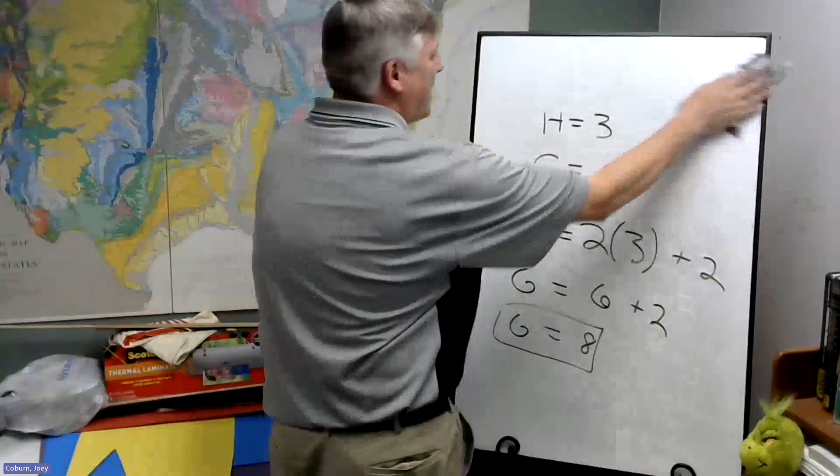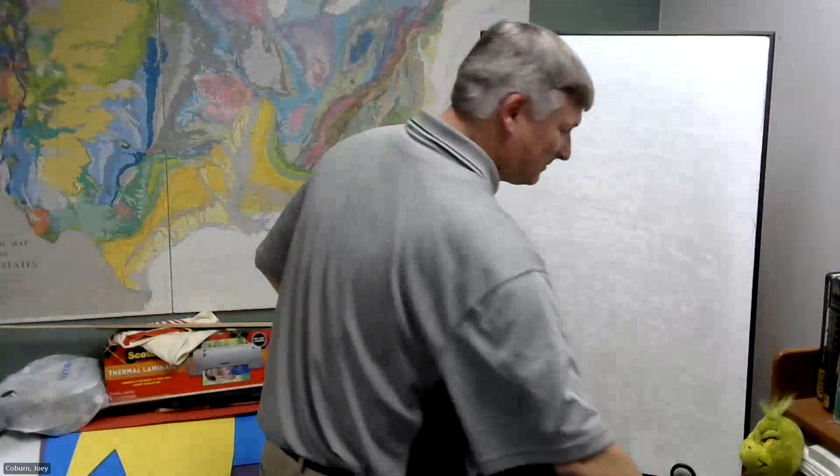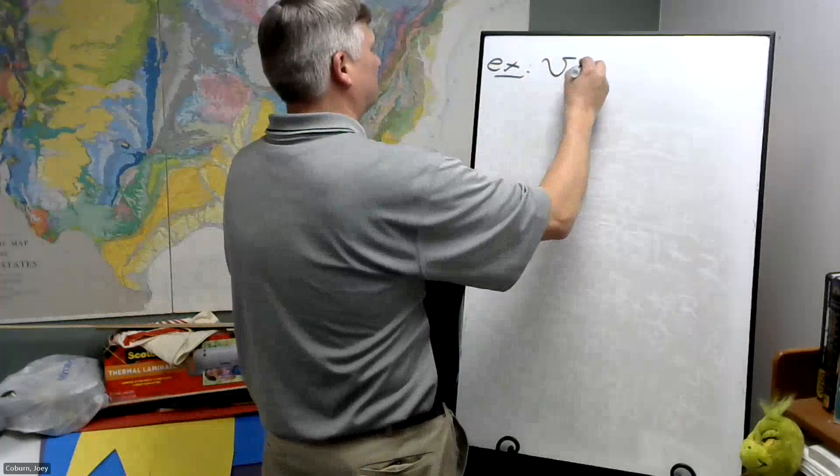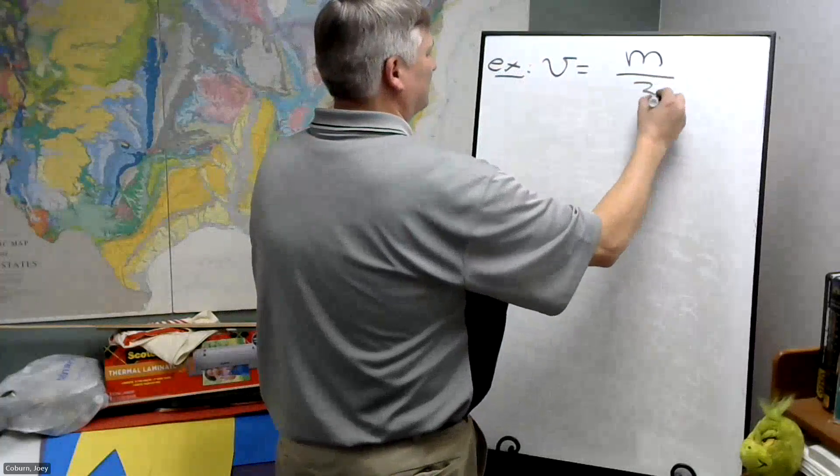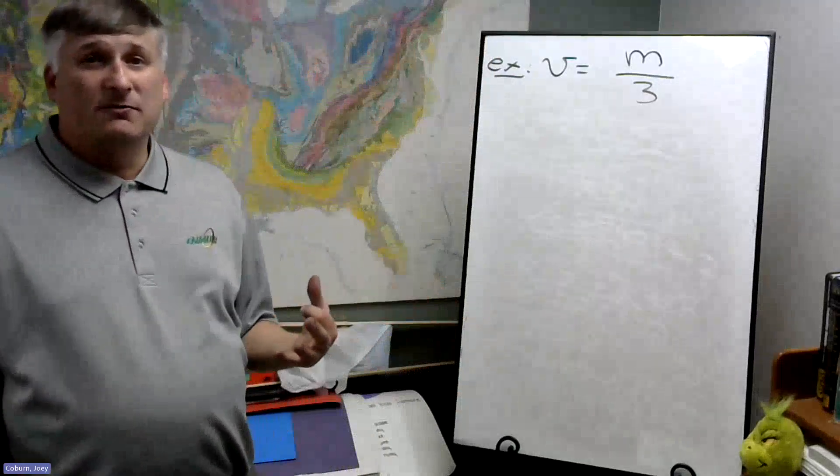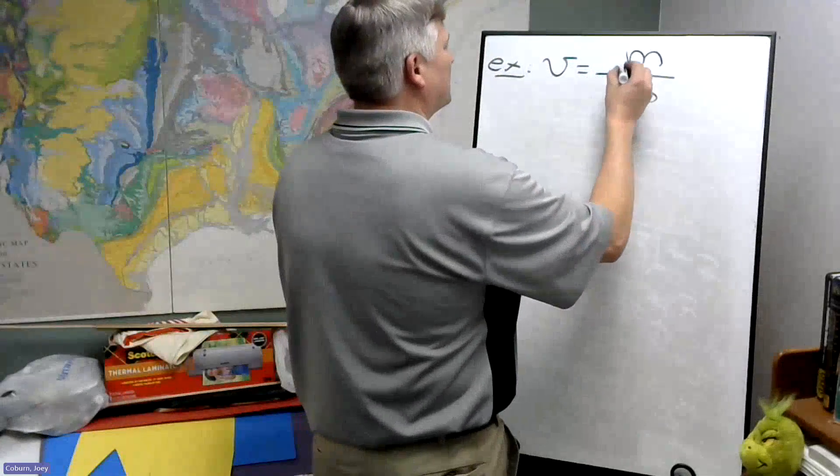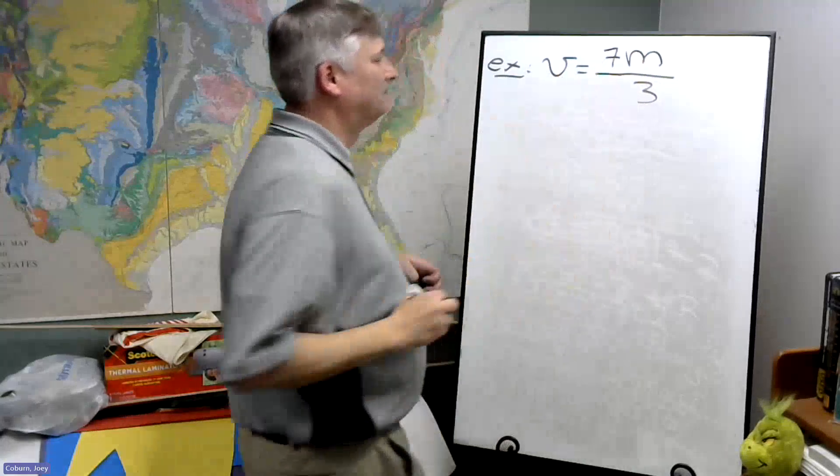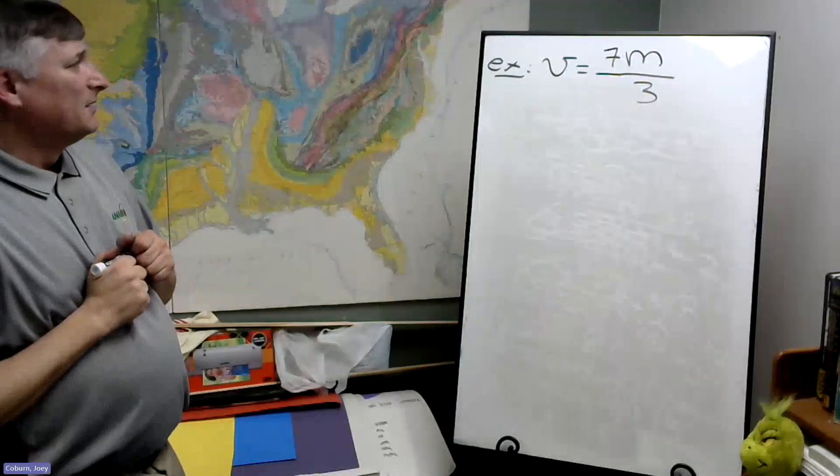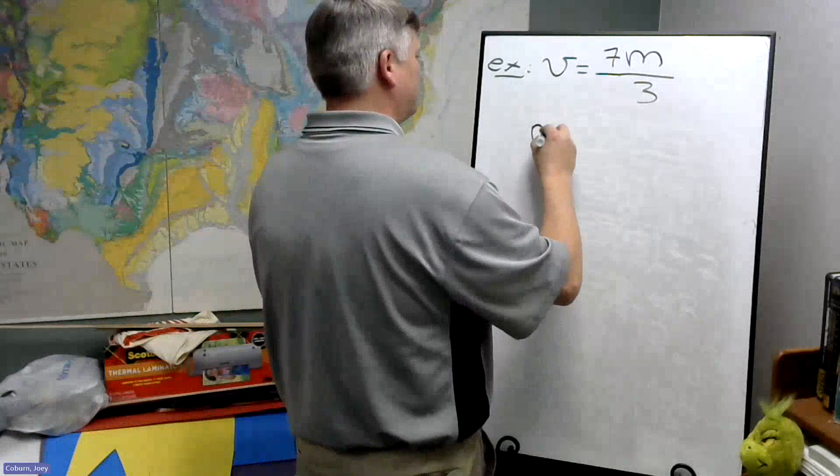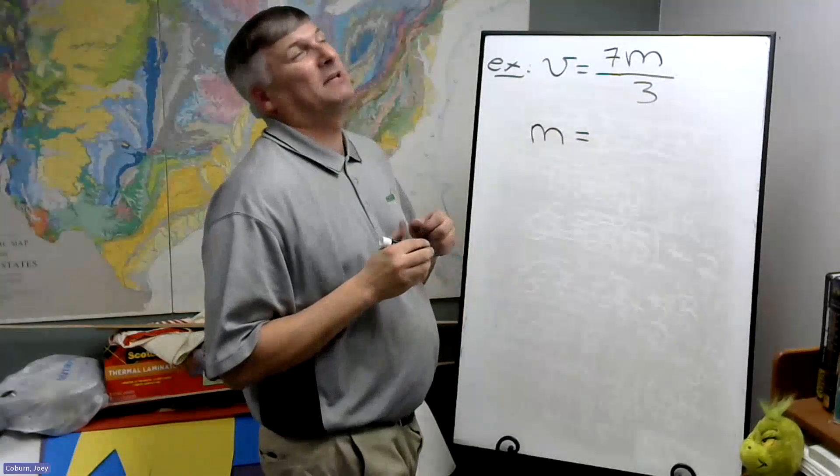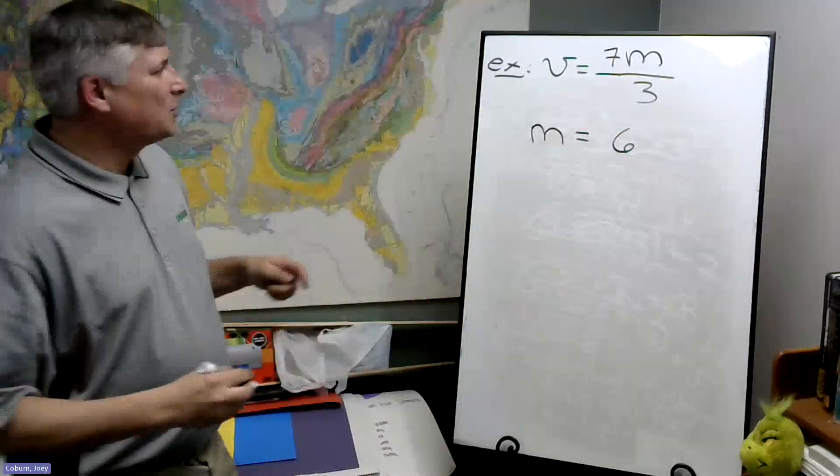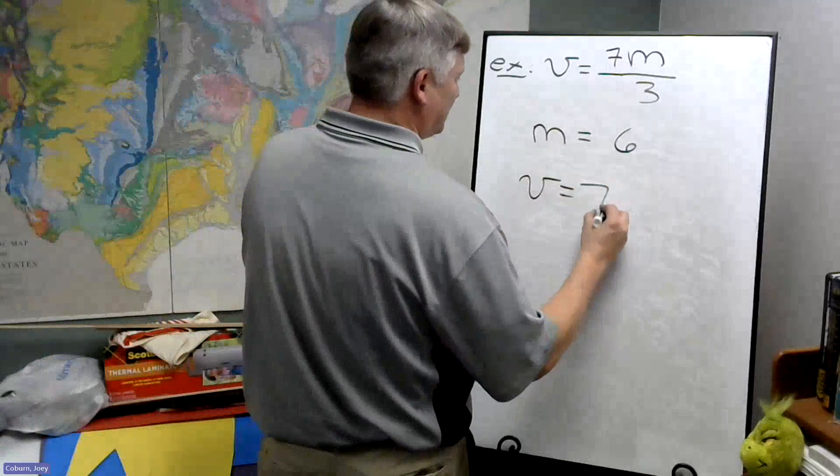Now, suppose we have division. Suppose V equals 7M divided by 3. Let's choose a value for M. Let M equals 6. So again, we're going to replace this. I'll go through the dot notation and I'll do the same thing with the parentheses notation.